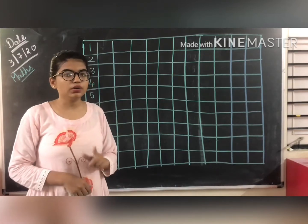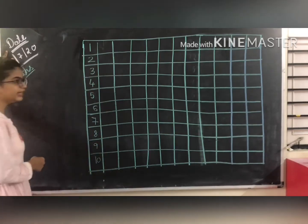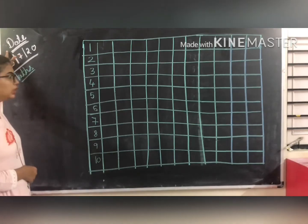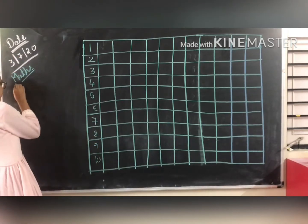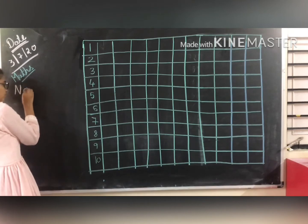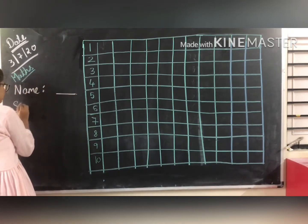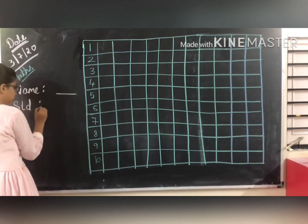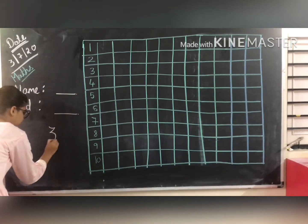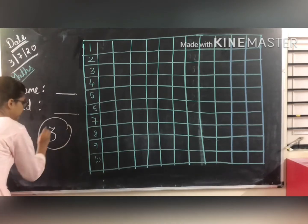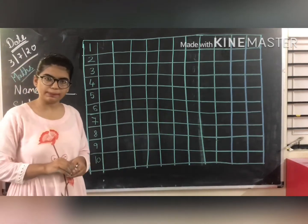First of all, what you have to do? You have to write the date at the corner. Then on the first page, you have to write your name, standard. And then you have to write number 3 and make a circle around it so that you can recognize it properly.